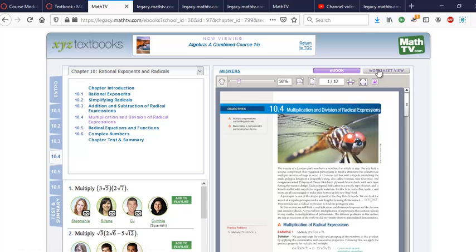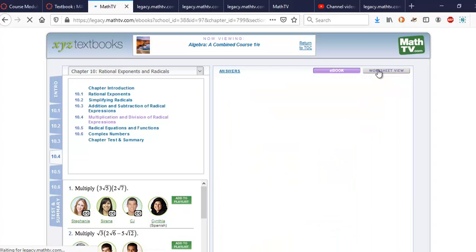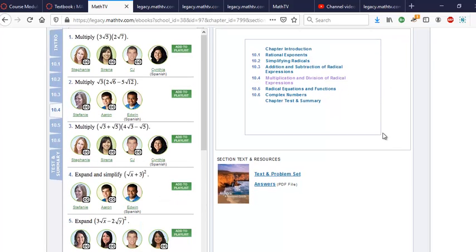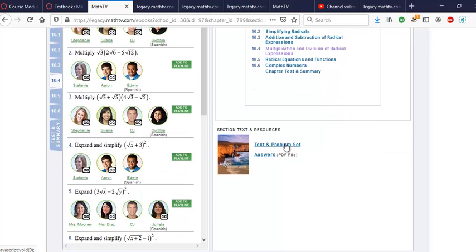I could click worksheet view. And it's slightly different. Here I can find the sections here. And textbook for 10.4 will be here. And the answers will be here. Right?